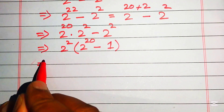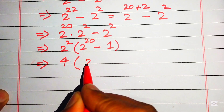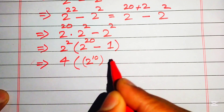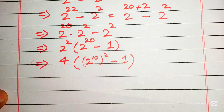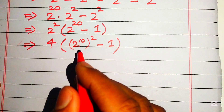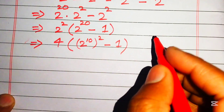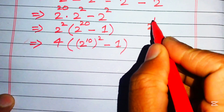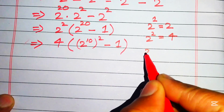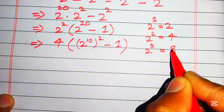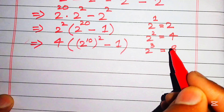We write 2 to the power of 20 as 2 to the power of 10, whole squared, minus 1. First we need to find the value of 2 to the power of 10. We can find this using the traditional multiplication method. We know 2 to the power of 1 equals 2, 2 to the power of 2 equals 4, 2 to the power of 3 equals 8. Each next value is just the previous term multiplied by 2.